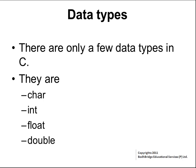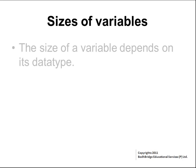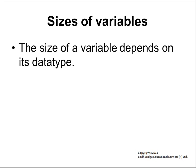Double has more precision than float and also saves real numbers. The size of a variable depends on its data type. By size we mean the amount of memory that is allocated to a variable of a specific data type.